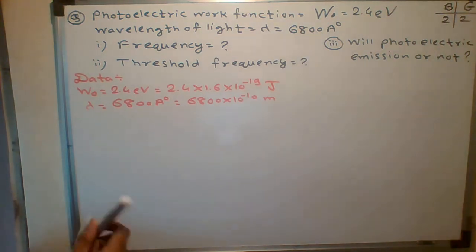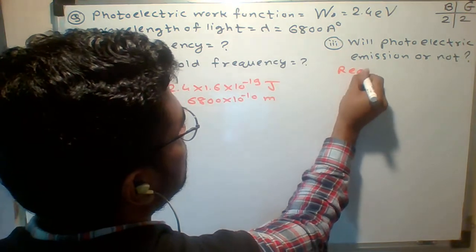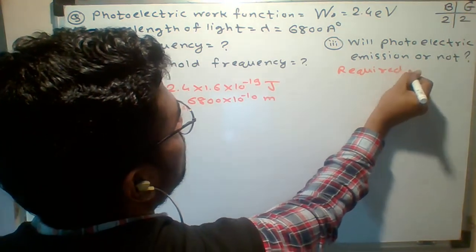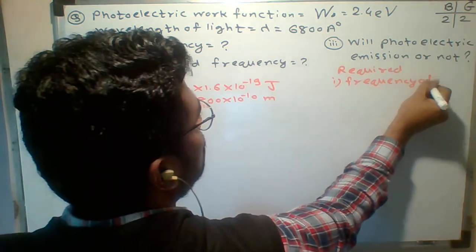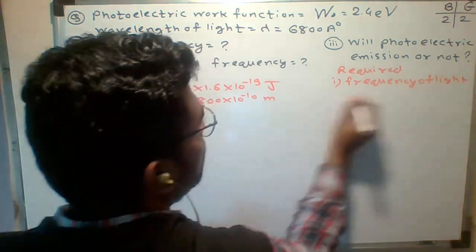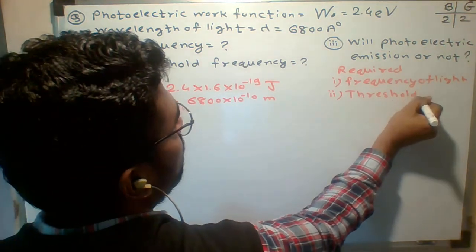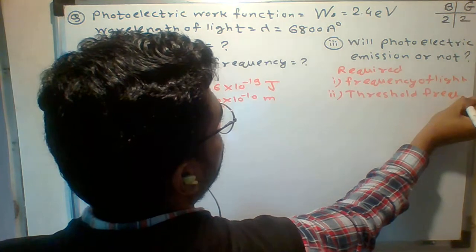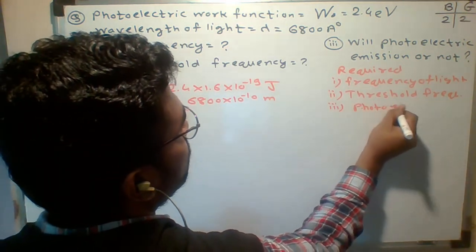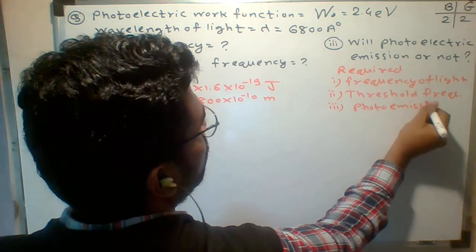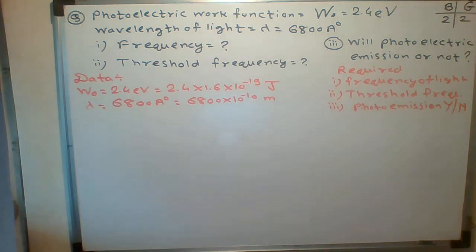Now, what do we need to find? There are three required things. First is the frequency of light. Second is the threshold frequency. And third is whether photo emission occurs or not.